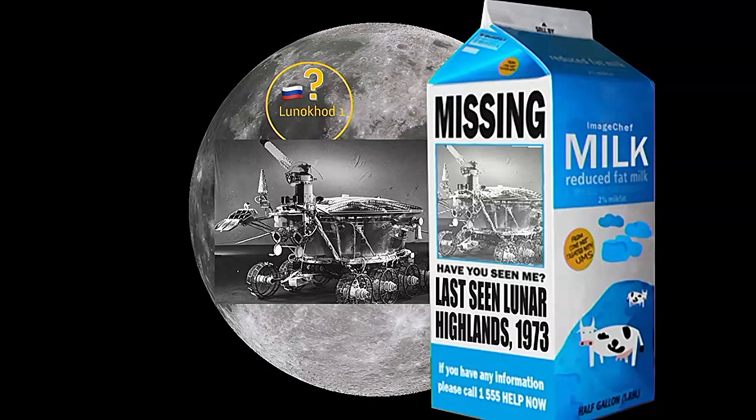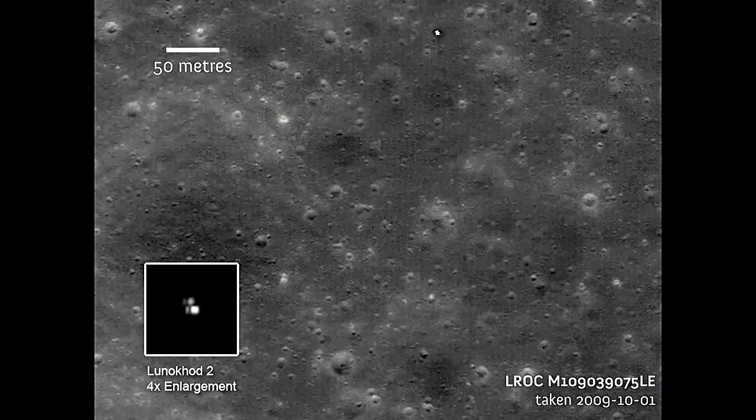So we didn't know where it was. We couldn't find it with the lunar rangefinder but someone figured that we can just use LROC, the reconnaissance orbiter camera, to find it playing a very, very arduous game of where's Wally. And that's what they did.